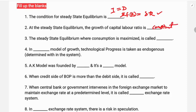The third question: the steady state equilibrium where consumption is maximized is called the Golden Rule of capital, or the golden level of capital.